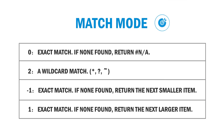XLOOKUP can perform both an exact match and an approximate match. There are 4 match codes: 0 means exact match — if none found, you'll receive N/A. 2 means approximate match, allowing wildcards. Minus 1 means exact match — if none found, the next smaller item is returned. 1 means exact match — if none found, the next larger item is returned. It's still difficult to comprehend with words alone, so here's an example.